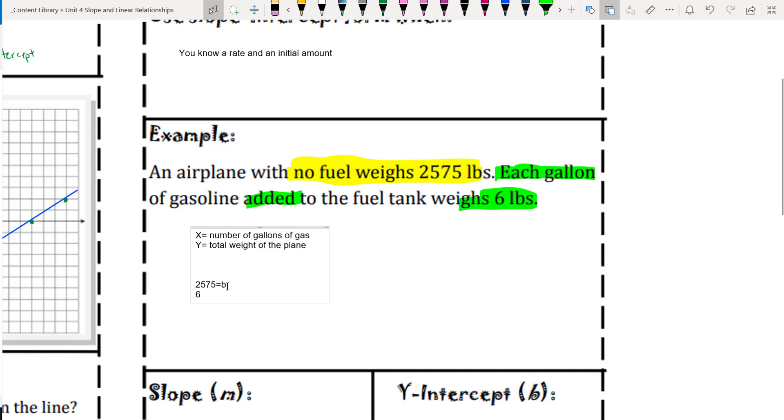This is the y-intercept and this is the slope. So then your equation, all together, would be y equals 6x plus 2,575.